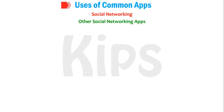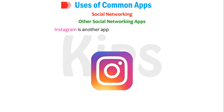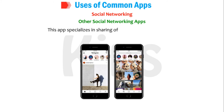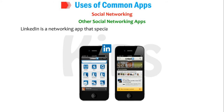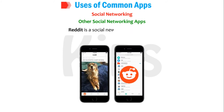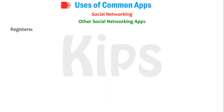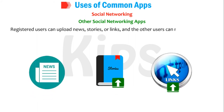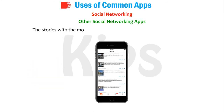Instagram is another app used for social networking. LinkedIn is a networking app that specializes in sharing business and professional information. Reddit is a social news aggregation app — registered users can upload new stories or links, and other users can rate these stories by voting them up or down. The stories with the most upvotes are moved to the top of the category.